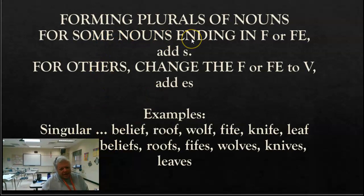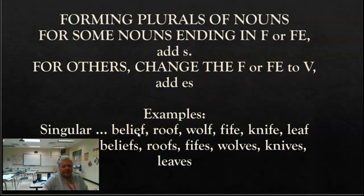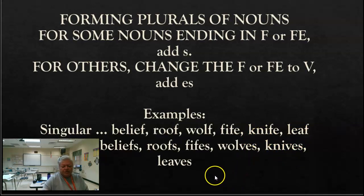For some nouns — and again, when it's some, it's only some of the time, so be aware — that end in F or FE, you add an S. For others, you change the F or FE to V and then add ES. So: belief ends in F, add S — beliefs. Roof — add S. Wolf — change to VES: wolves. Fife — add S. Knife — change F to V, add ES. Leaf — change F to V, add ES: leaves.